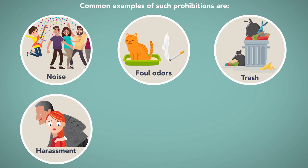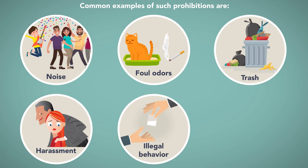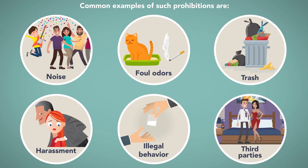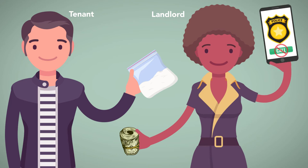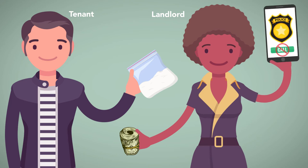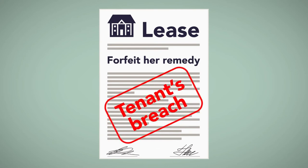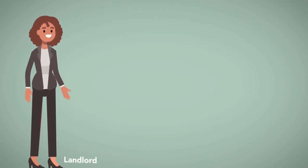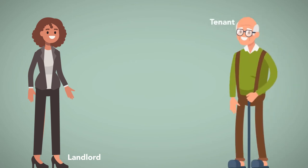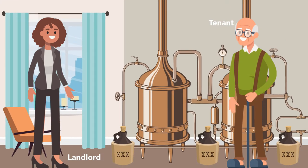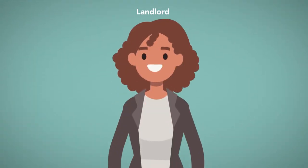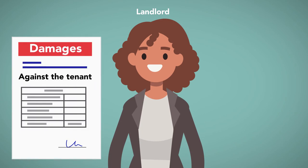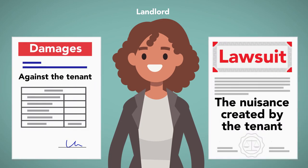Tenants are also prohibited from using the leased property to carry out illegal behavior. This also includes third parties whom the tenant knowingly allows to conduct illegal acts in the rented property. However, if the landlord participates in the illegal conduct or fails to take remedial action against the tenant upon learning of the illegal conduct, the landlord may forfeit her remedy for the tenant's breach of lease. For example, if a landlord knows that one of her tenants uses the apartment to illegally manufacture and sell intoxicating liquors without a license and does nothing to prevent it, the landlord may lose the opportunity to seek damages against the tenant and may be civilly liable for the nuisance created by the tenant.